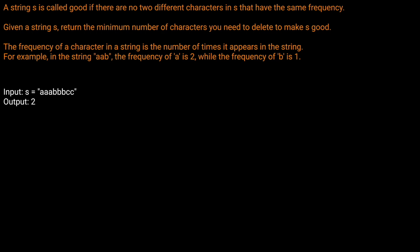Let's look at an example. If we're given the string 'aaabbbccc', the number we need to delete is going to be two. Let's look at the character frequencies. 'a' has a count of three, 'b' has a count of three, and 'c' has a count of two. So immediately we can see that two characters have the same count, and we're not allowed to have that — it's not good if two characters have the same frequency.